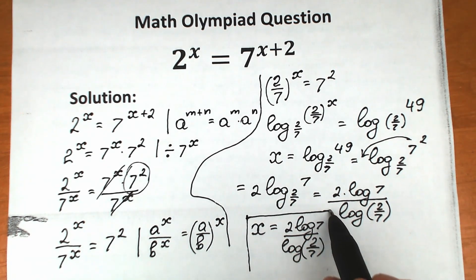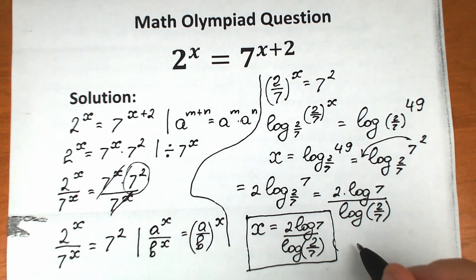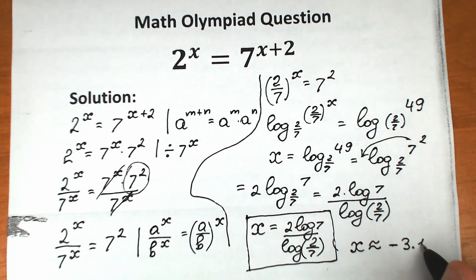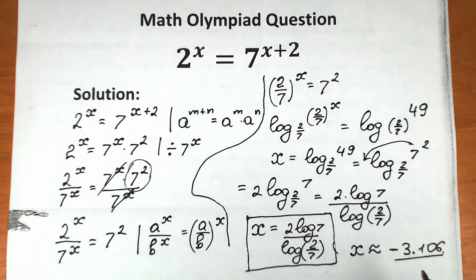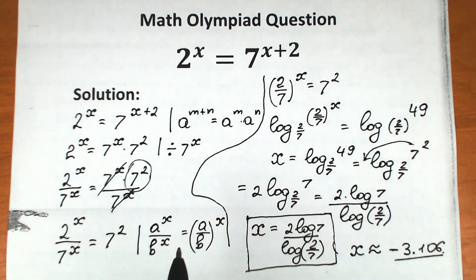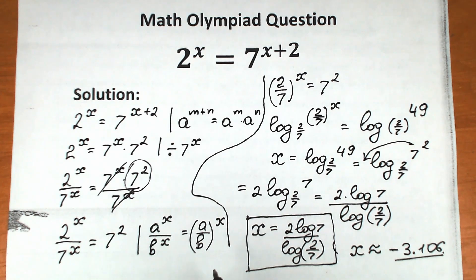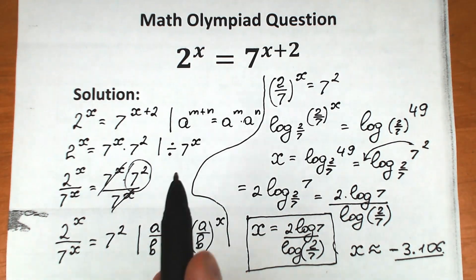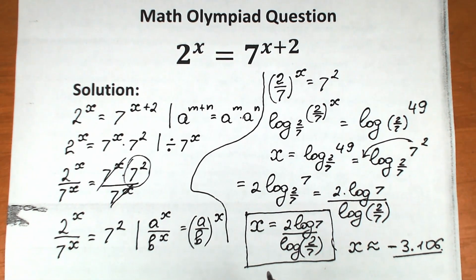This is not an integer, so we get an approximate answer. x is approximately equal to minus 3.106. I've written this approximate value for anyone who needs it. This was my step-by-step explanation — covering the power rule, the division trick, and the log property. I hope you understand. Thank you for your time, have a great day, and see you in the next video!